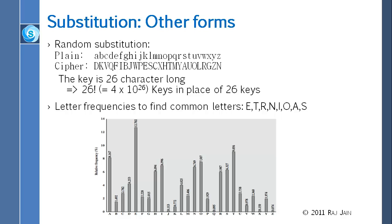However, one of the weaknesses of languages themselves is that some letters are used more often than others. As shown here, E is used most often, then T, R, N, I, O, A, S. So whenever you get a message, regardless of what substitution was used, you find the most common letter and guess that it is E, the second most common as T, and so on. Common digrams like T-H-E are used quite a bit in English. So you don't really need to try 26 factorial combinations — you can do it much faster. This weakness remains in all substitution methods.